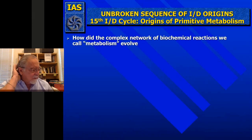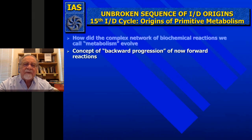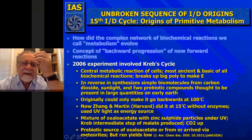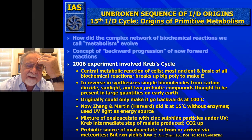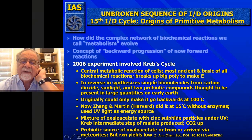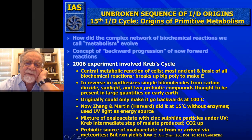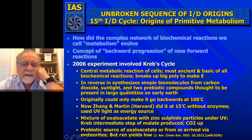More popular today is the clay deposits hypothesis. In any case, you first had random monomers that became polymers, but they were later specified by genetics. But how did you get the first genetic code? Nowadays they think that RNA became the first genetic code. One route is backward progression of now-forward actions. Let's take an experiment done in 2006 involving the Krebs cycle—the central metabolic reaction of all cells, implying it is very, very ancient. It breaks up big polymers to make electrons; in reverse, it synthesizes simple biomolecules.